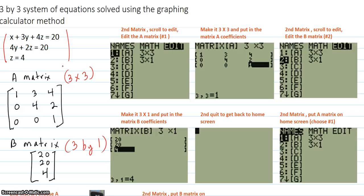And we're going to create an A matrix by reading off the coefficients, like that's a 1 right there. 3, 4, 1, 3, 4. A 4, there's a 0 here in front of the x. 0, 4, 2, 0, 4, 2. And this z equals 4. There's 0 in front of the x, 0 in front of the y, and a 1 in front of the z.